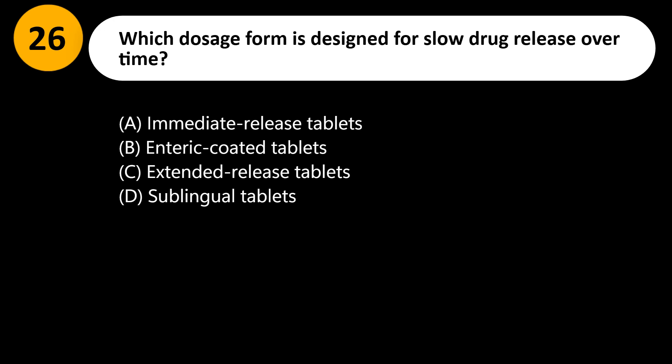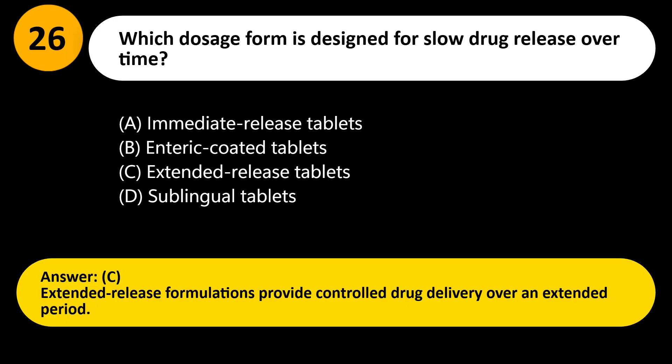Which dosage form is designed for slow drug release over time? A) Immediate release tablets, B) Enteric coated tablets, C) Extended release tablets, D) Sublingual tablets. Answer: C. Extended release formulations provide controlled drug delivery over an extended period.